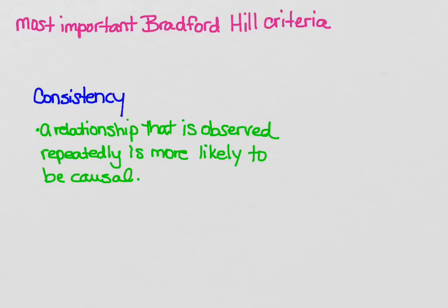The first criterion is consistency. A relationship between an exposure and a disease that is repeatedly observed across multiple studies and multiple settings is more likely to be causal. This is similar to what you hear about study replication. Even if there's one study that shows a relationship between exposure and disease, that's not enough to really justify assuming a causal relationship. You need to replicate that study to have strong evidence.